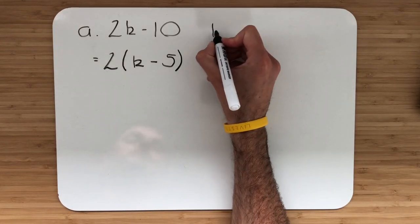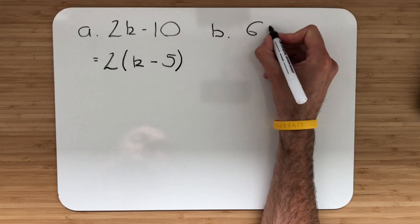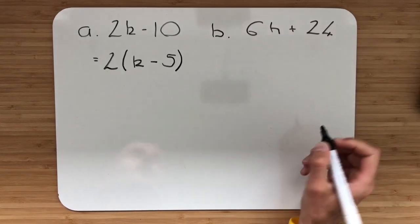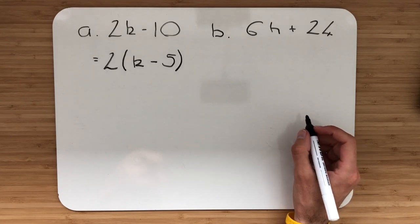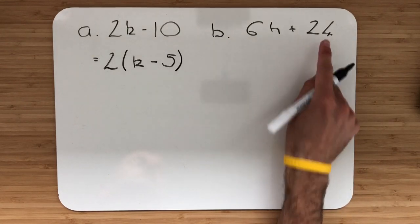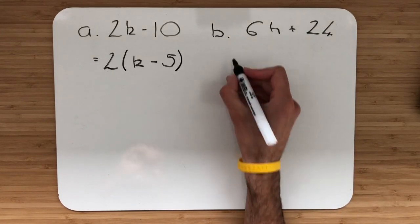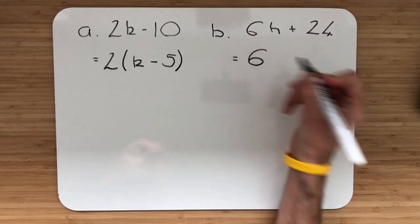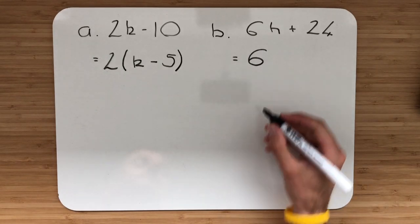Let's do part B. We have 6h and then we're adding 24. Same thing again, let's check for the highest common factor in 6h and also in 24. The number 6 is the highest common factor. That number goes into both 6 and 24.